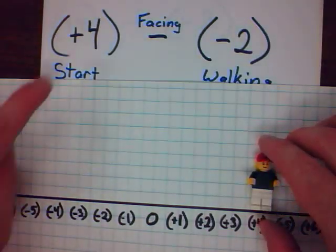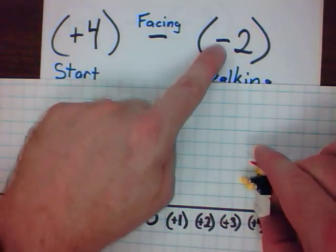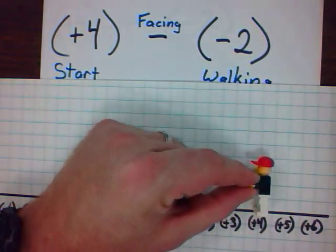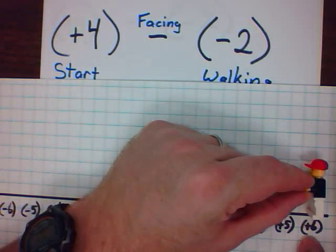So, starting at positive four, facing the negative numbers, he's going to take two steps backwards. Here he goes. One, two. There, I have the answer. Positive six.